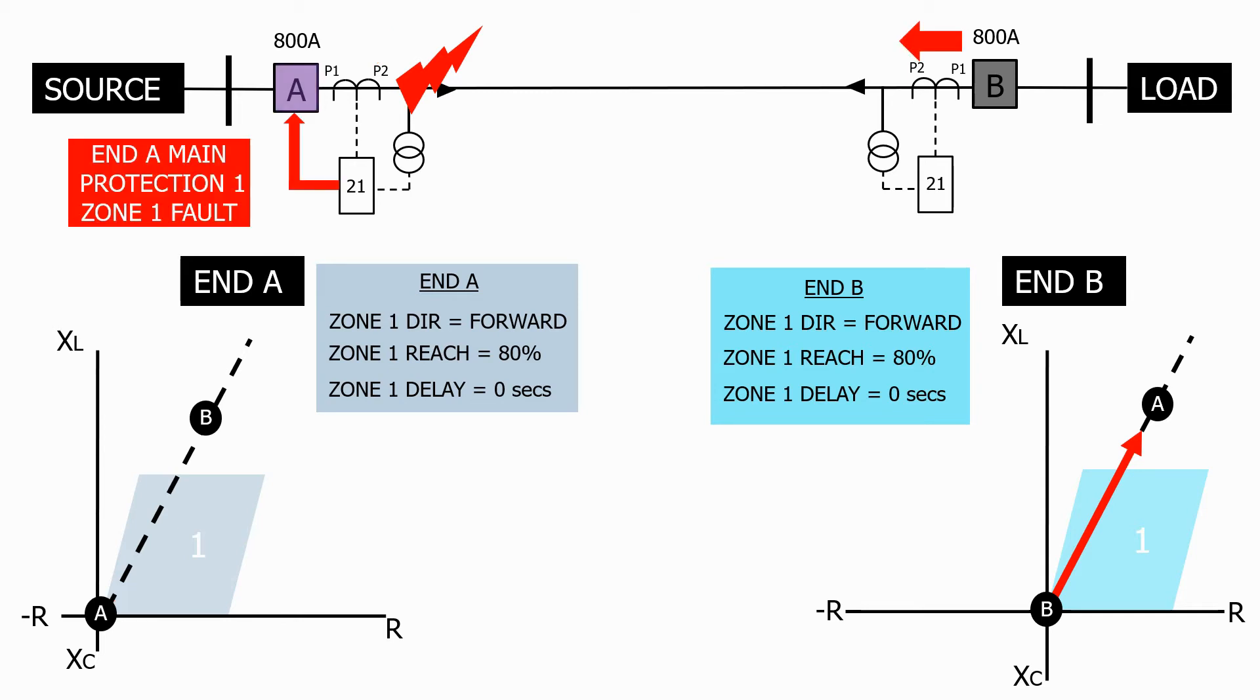But we still have fault current being fed in from end B. We therefore need to do something else to protect the feeder.